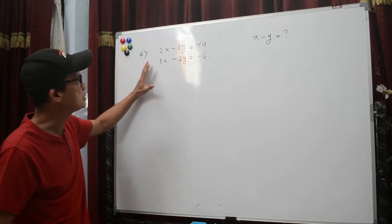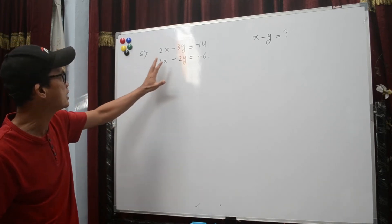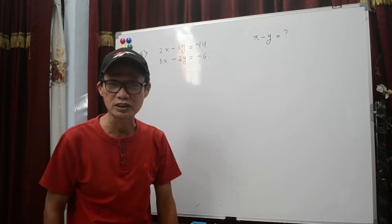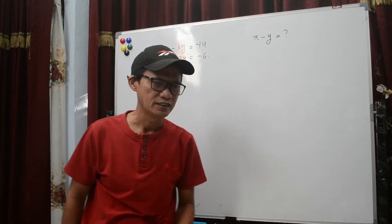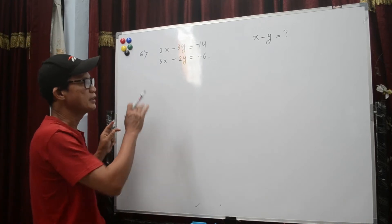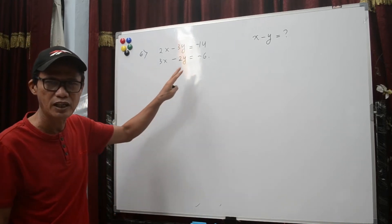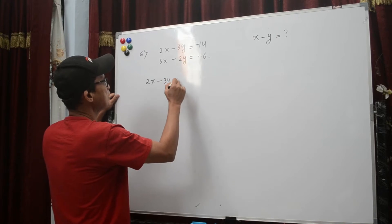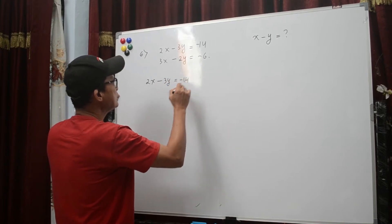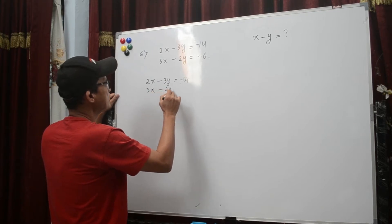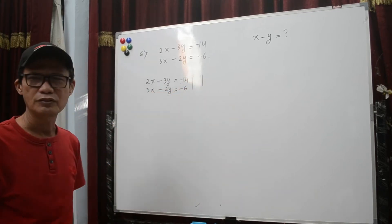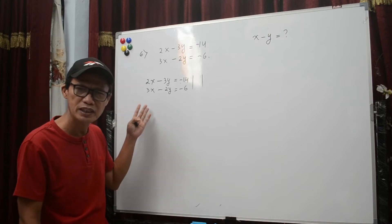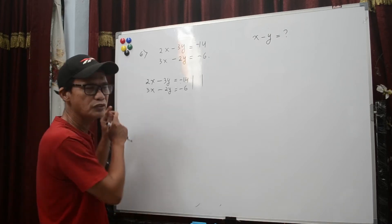Look at this system of linear equations: 2x minus 3y equal to minus 14, and 3x minus 2y equal to minus 6. Then what is the value of x minus y? We find out the value of x and y by eliminating the system. To find x, we have to eliminate the value of y.